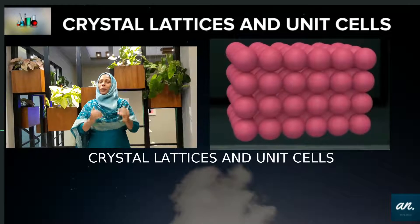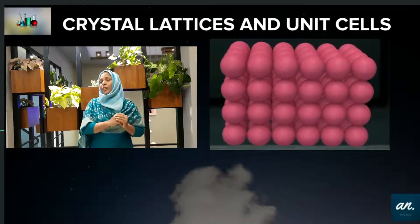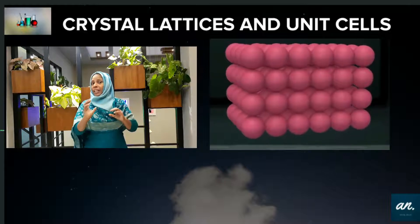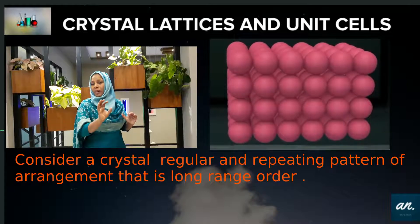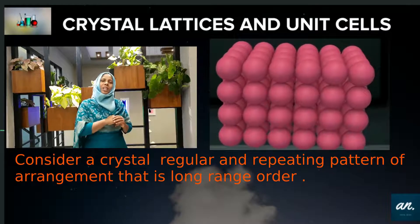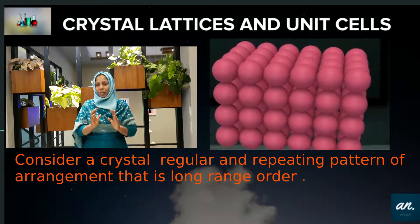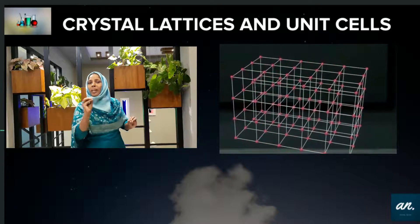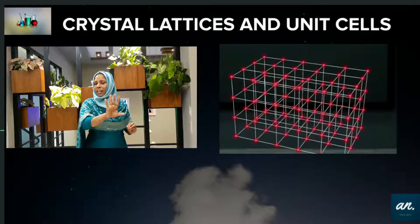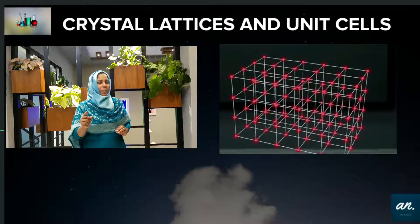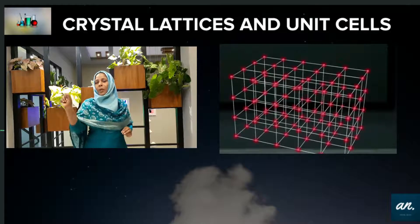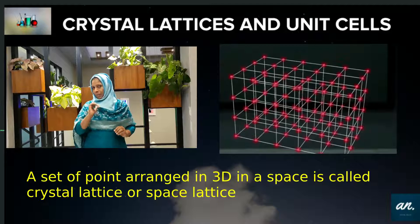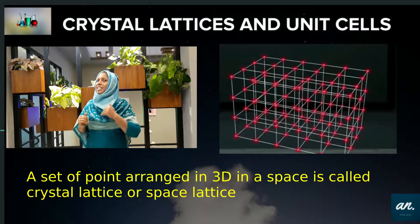Crystal lattices and unit cell. In the previous video we discussed crystalline solids. For this video we are going to discuss the concept. Each particle is considered as a point — we use points for this, arranged in three-dimensional space. A set of points arranged three-dimensionally in space is called Crystal Lattices.